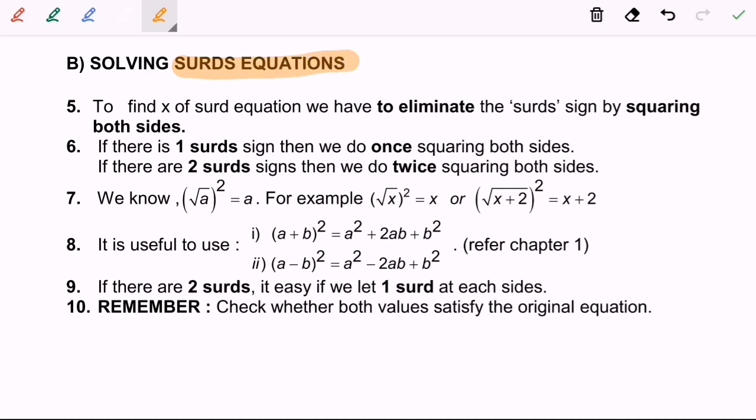To find the value of x of surd equation, we need to eliminate the surd sign by squaring both sides. If there is one surd, then we need to do one squaring both sides. If there are two surd signs, then we do twice squaring both sides.